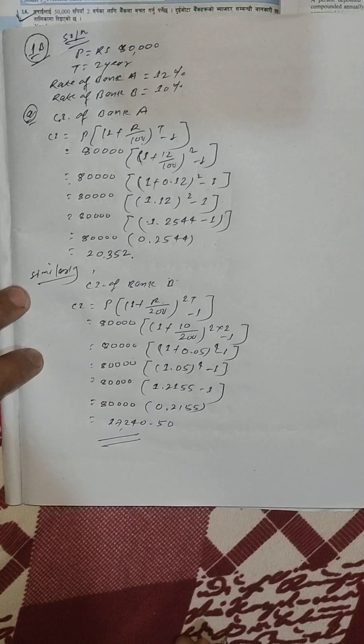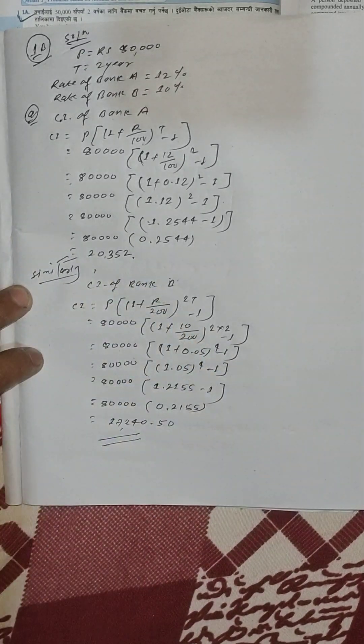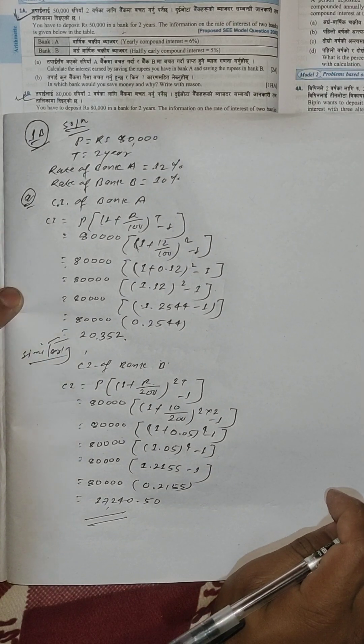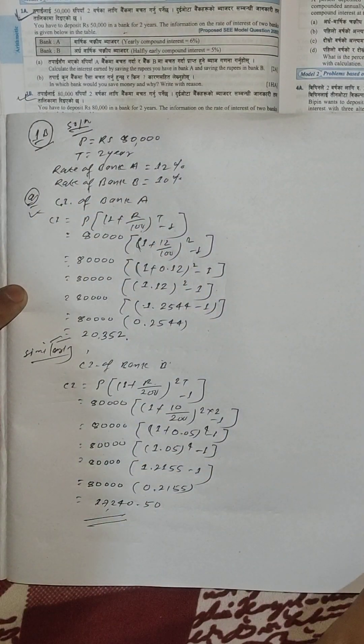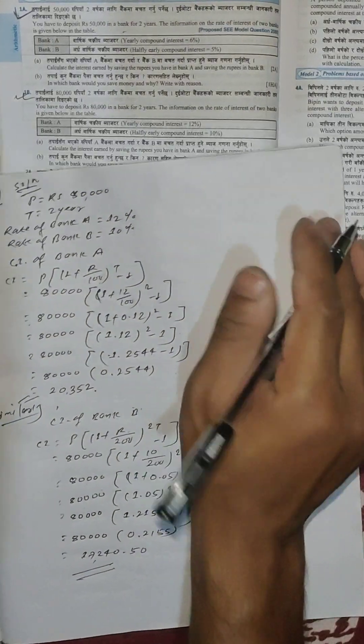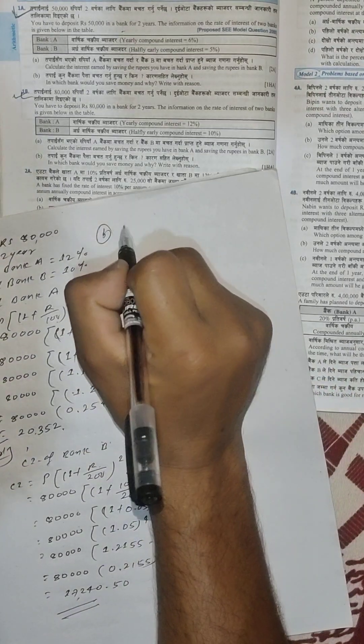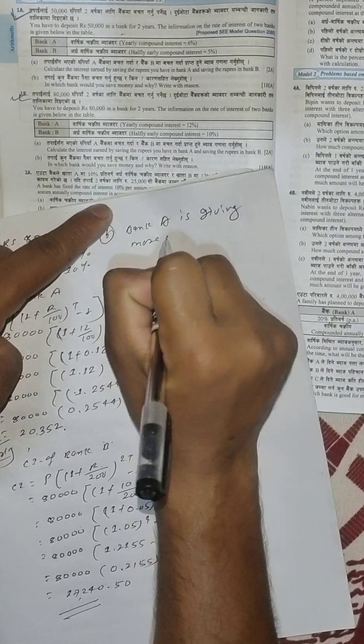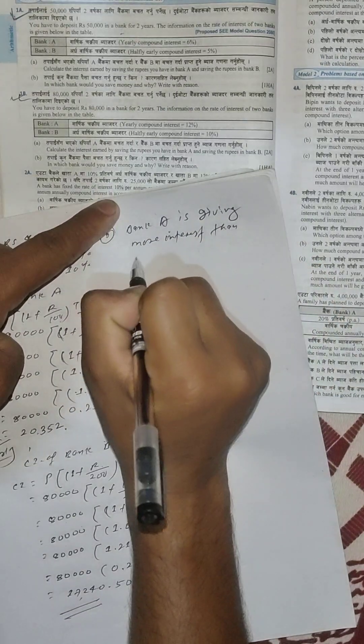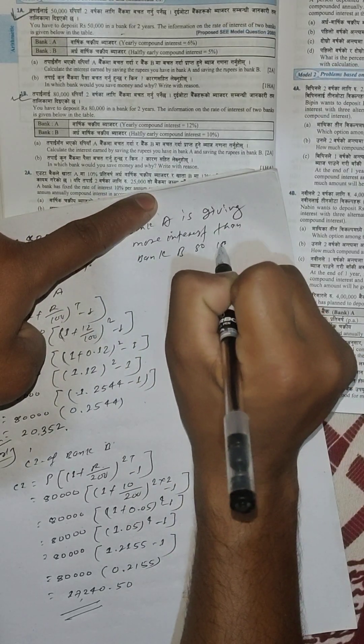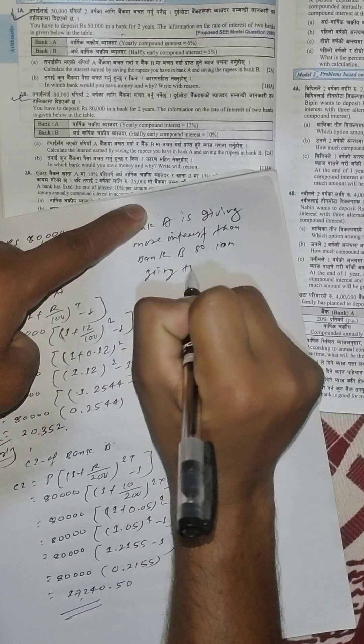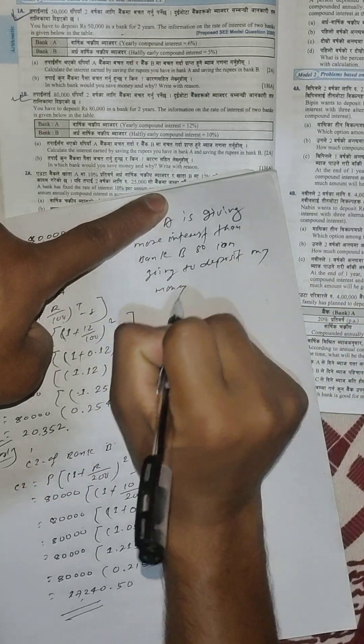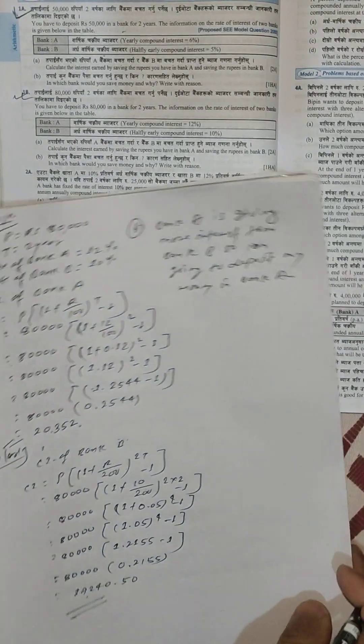Comparing the results: Bank A is giving Rs. 7,632 while Bank B is giving Rs. 6,465. Bank A is giving more interest than Bank B. Therefore, if you want more interest, you should deposit your money in Bank A.